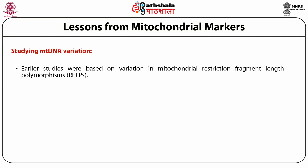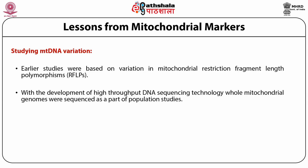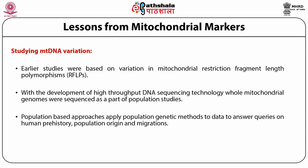Earlier studies were based on variation in mitochondrial restriction fragment length polymorphisms (RFLPs). With the advent of sequencing methods, complete sequencing of mitochondrial DNA and PCR products for the first hypervariable region (HVR1) of the control region was done. With high-throughput DNA sequencing technology, whole mitochondrial genomes were sequenced as part of population studies. Data obtained is analyzed using lineage-based or population-based approaches. Lineage-based approaches study population history by examining the diversity of haplogroups, defined by a common set of mutations that tend to differ among regions.